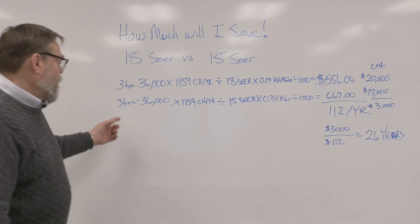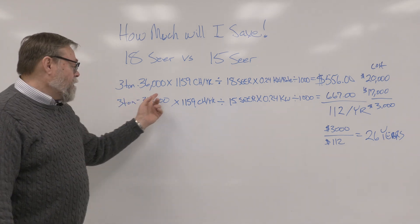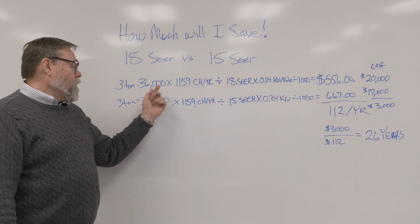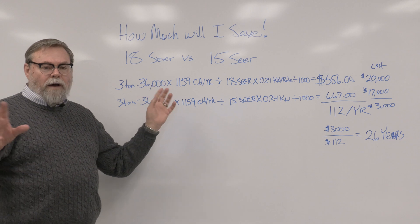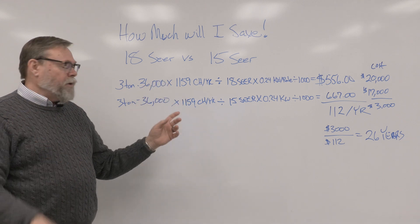First off, we're taking a three-ton unit. Three-ton unit makes 36,000 BTUs. So then this is a nominal. It can differ a little bit between systems.